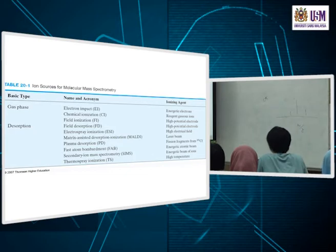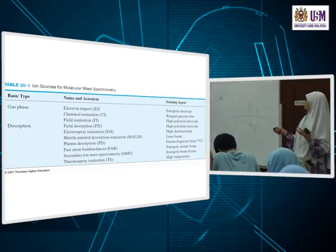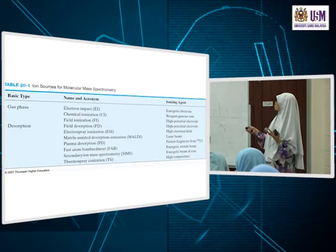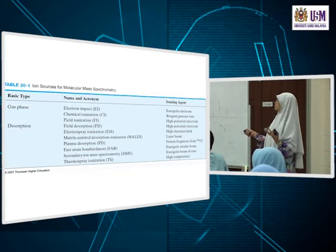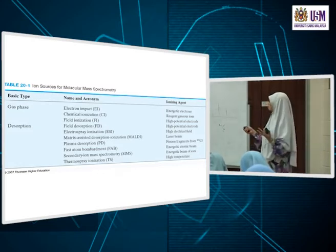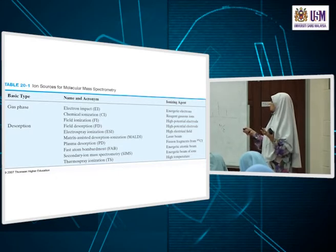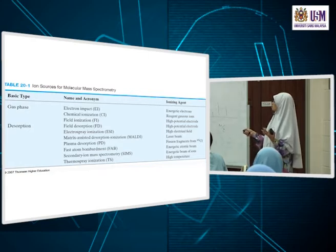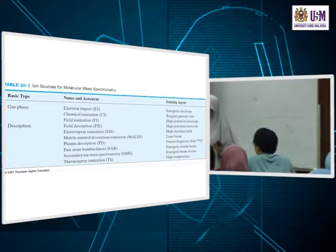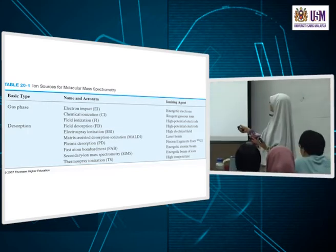Ultimately they're all mass spectrometry — different ways of producing ions. In the table, the ionizing agent is shown for each method. For electron impact, energetic electrons bombard the molecules to break them into ions. Chemical ionization uses a reagent of gaseous ions. Field ionization uses a high potential electrode. These are the ion sources — this is the part where you form the ions.